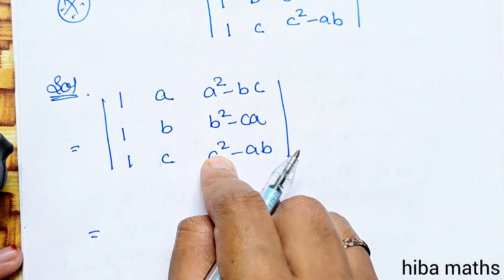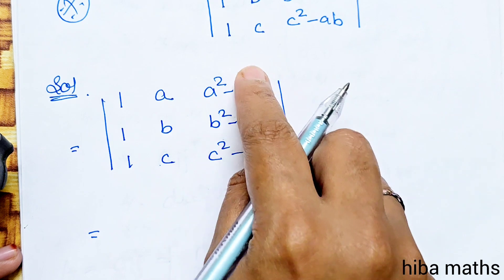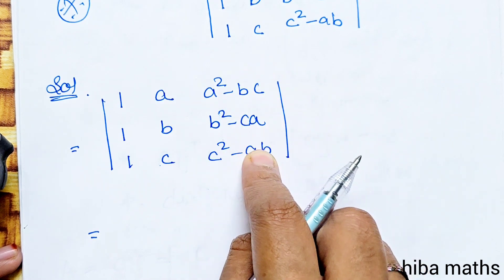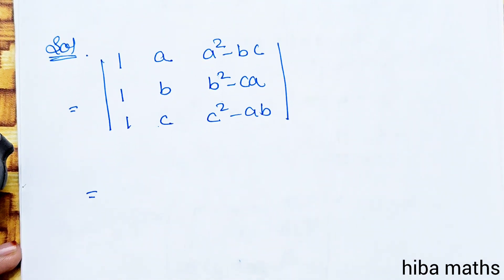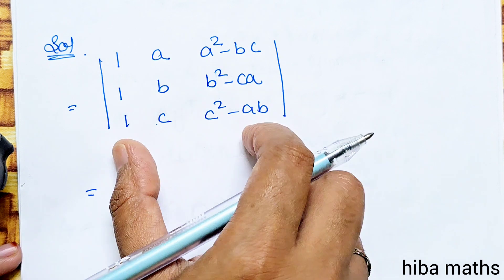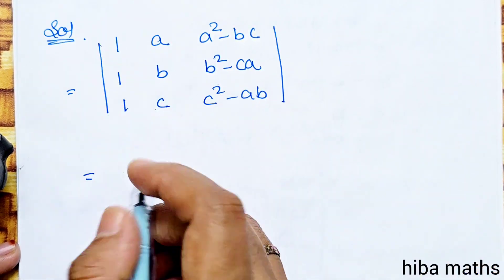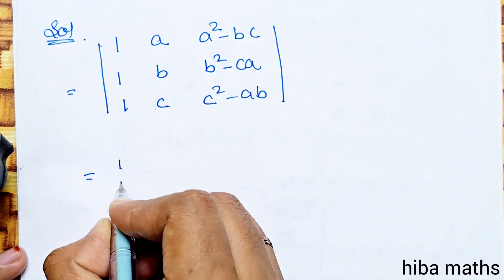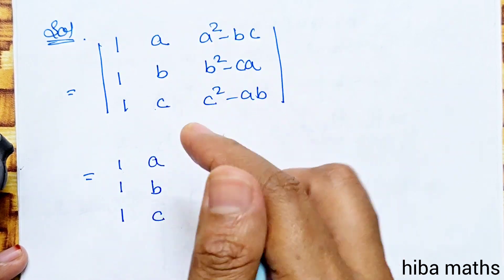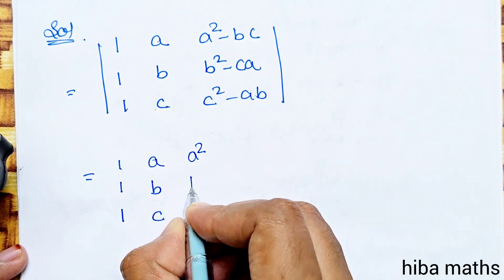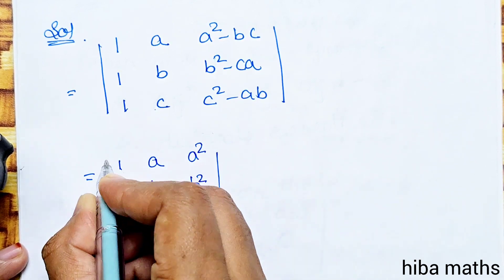We will show the matrix with columns. The first column has entries 1, a, a² and b², c². The 1st column must be changed, the 2nd column must be changed, and the 3rd column must be left. The 1st column entries are a², b², c².